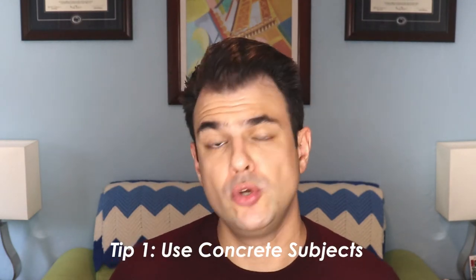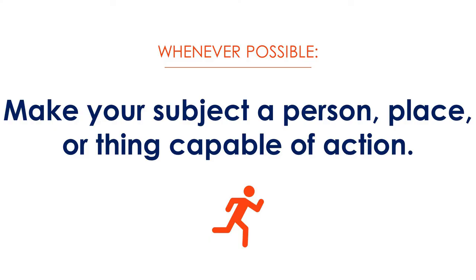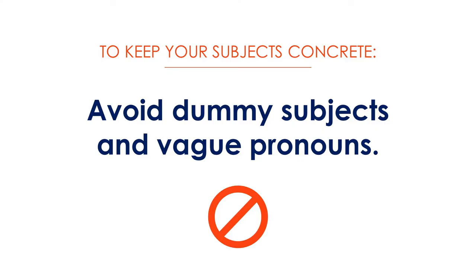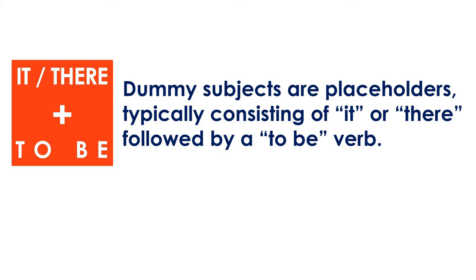Let's talk about the first tip: use concrete subjects. Whenever possible, you want to make the subject of your sentence a person, place, or thing capable of action — that's the 'who' in 'who does what to whom.' To keep your subjects concrete, you want to avoid two very common categories of error: dummy subjects and vague pronouns.